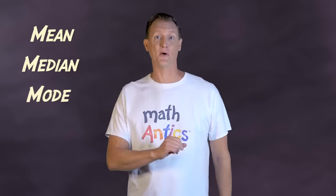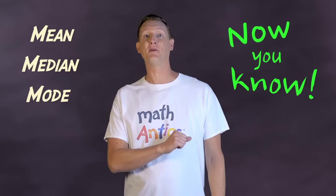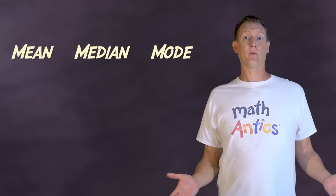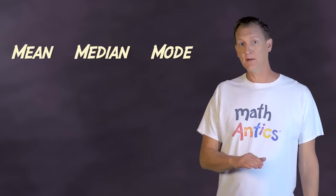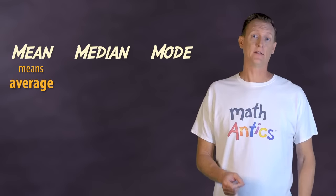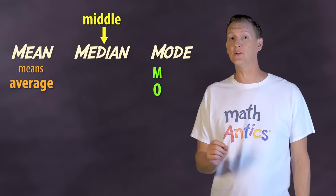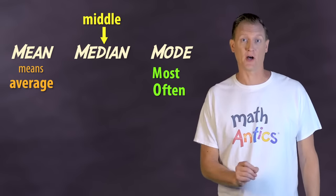Alright, so that's the basics of mean, median, and mode. There are three really useful properties of datasets and now you know how to find them. But sometimes, the hardest part about mean, median, and mode is just remembering which is which. So remember that mean means average, median is in the middle, and mode starts with MO, which can remind you that it's the number that occurs most often.